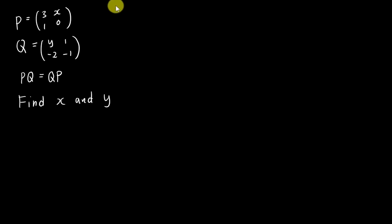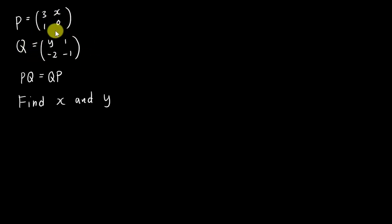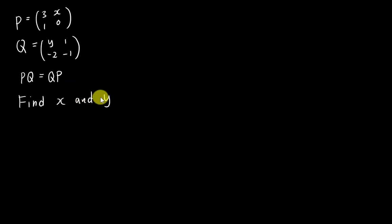In this question, you basically have three pieces of information. They tell you the matrix P and then they tell you the matrix Q. And then they give you an equation PQ equals to QP. The question asks you to find the value of X and Y.